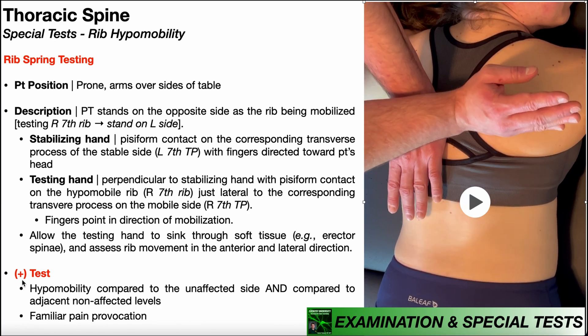A positive rib spring test is going to present as hypomobility compared to the unaffected side and compared to adjacent non-affected levels, along with familiar pain provocation, which will typically occur in a unilateral parasagittal pattern.